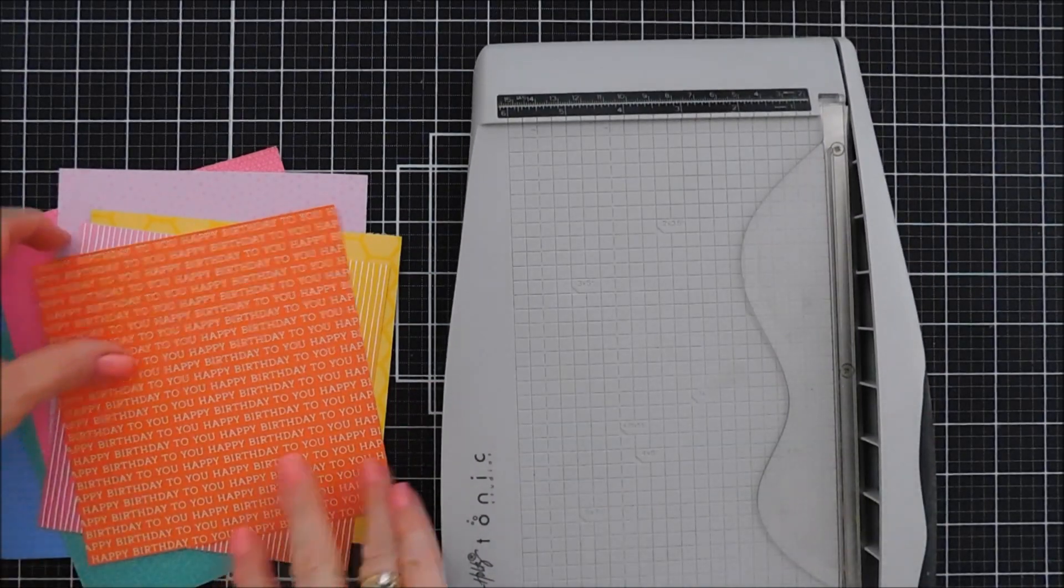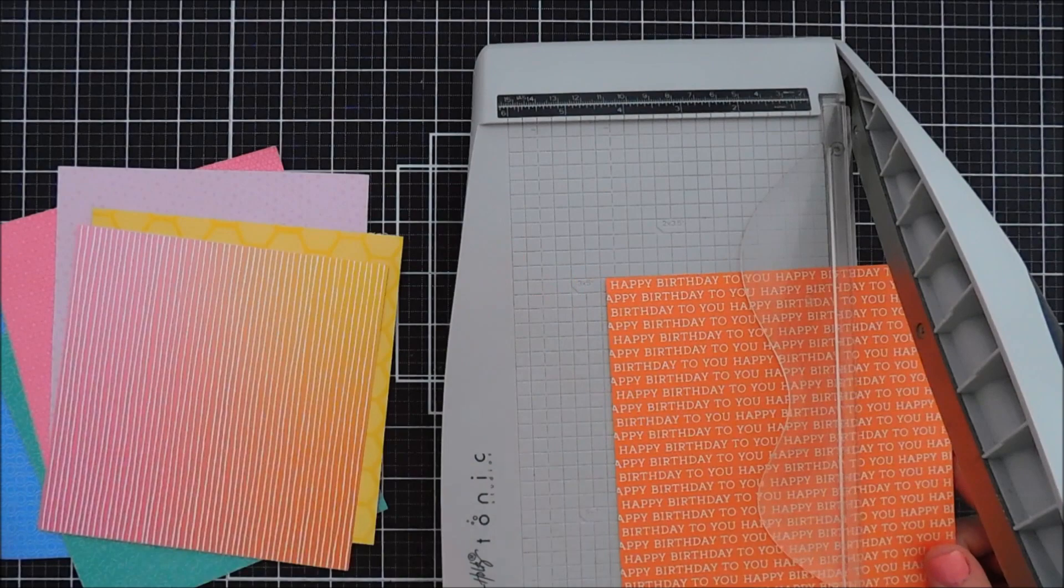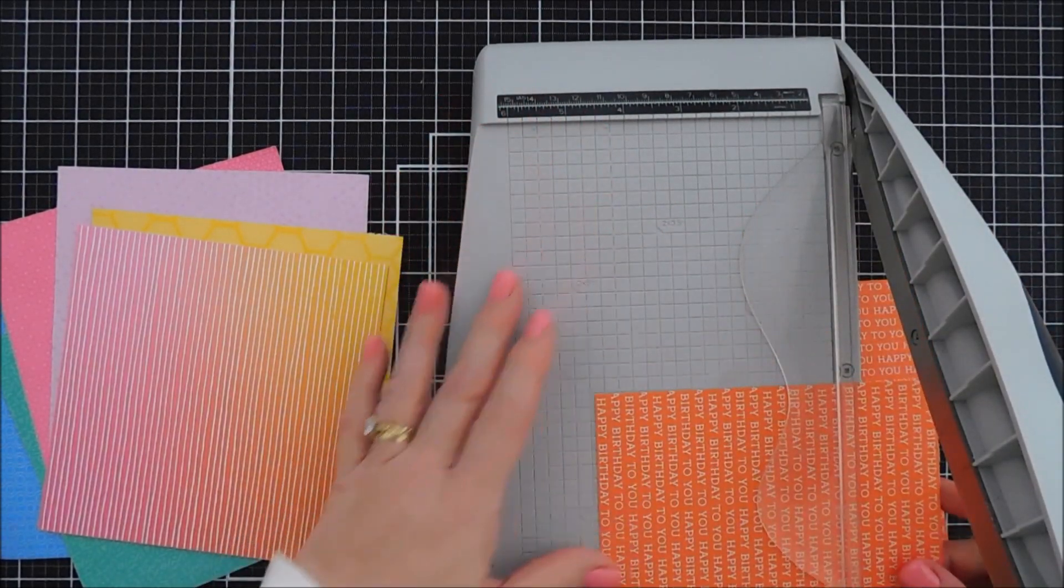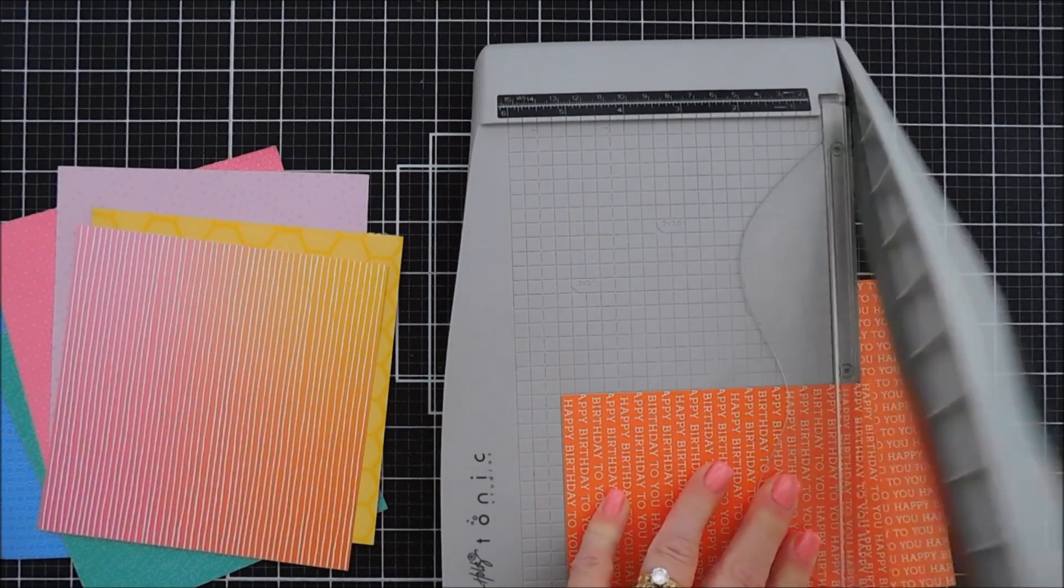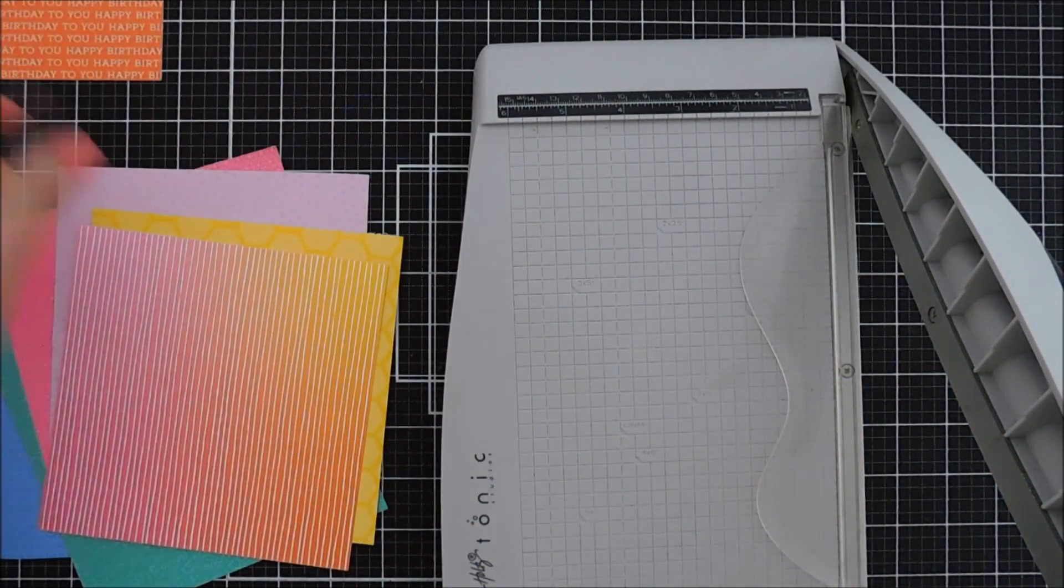We're going to start off by taking this happy birthday print paper and trim down a background panel. We're going to trim at 4 inches, turn it around, and trim at 5 and a quarter. This is going to give me a background panel that's slightly smaller than my card base.